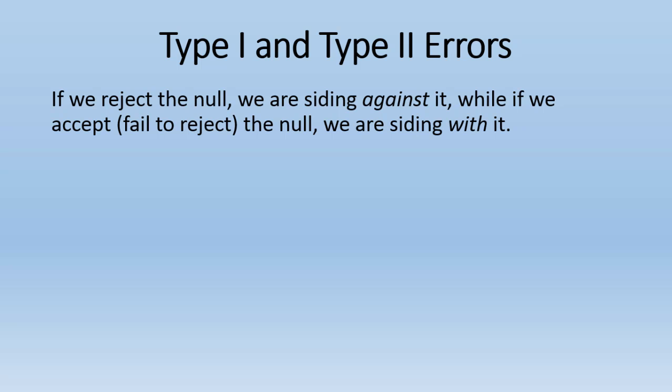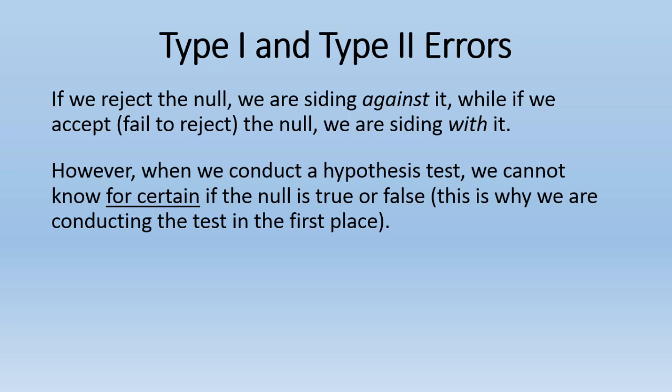If we reject the null, we are siding against it, while if we accept the null, we are siding with it. However, when we conduct a hypothesis test, we cannot know for certain if the null is true or false. That's why we're conducting the test in the first place.